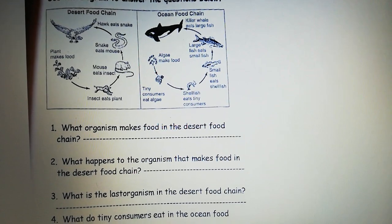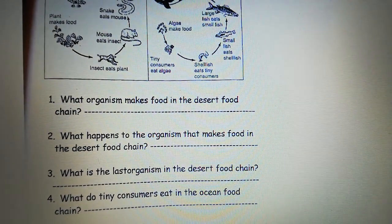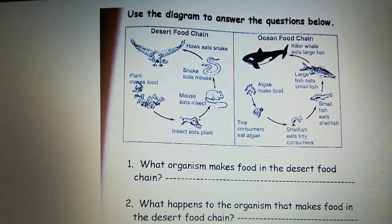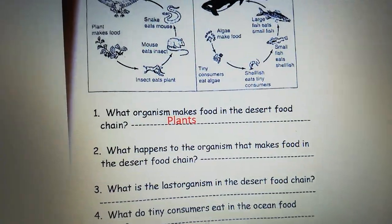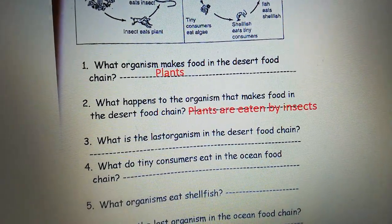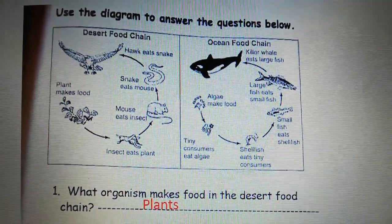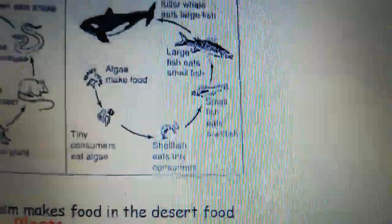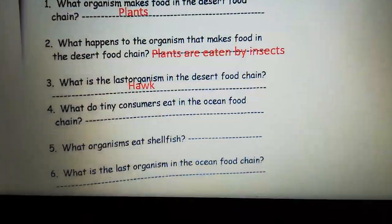Again for this food chain, page 24: What organism makes food in the desert food chain? The plants are the only producers that make food. What happens to the organisms that make food in the desert food chain? They are eaten by the insects — so plants are eaten by insects. What is the last organism in the desert food chain? The last organism is the hawk. What do tiny consumers eat in the ocean food chain? These tiny consumers eat the algae — so the answer is algae.